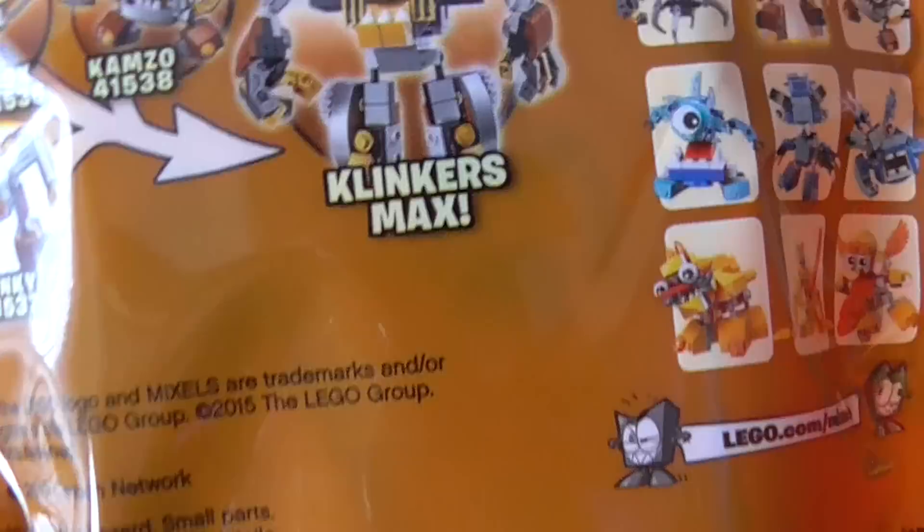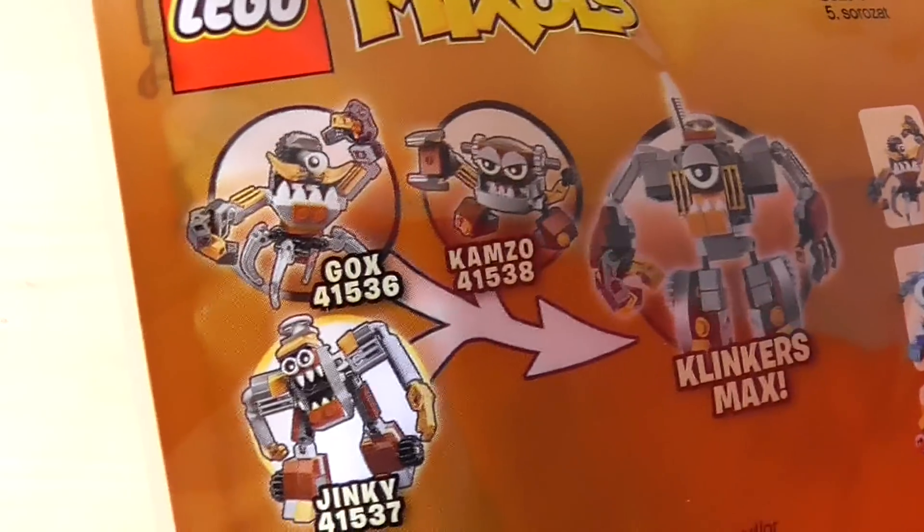This time it is on Jinky and you can see he's set 41537 on the front, you can see him there. He is of course from the Clinkers tribe and you can see the other Clinkers available and then all of Series 5.